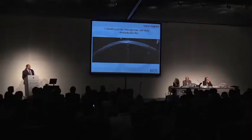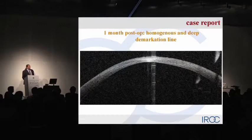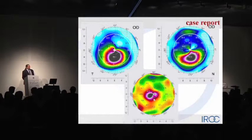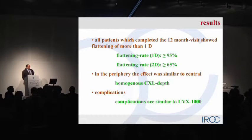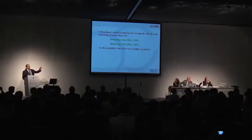That is the topography. Here's the thinnest point and the demarcation line — pretty homogeneous cross-linking at one month. This is a comparison of the topography: the steepest point went from 55 diopters down to about 52 diopters, and the difference maps show around six diopters of flattening within the pupil, which explains the improvement of visual acuity. Looking at the data, about 95% of patients received a flattening of one diopter or more, and a flattening rate of two diopters or more was achieved in 65% — much more than has ever been seen before in standard cross-linking. In the periphery, the effect was always similar to central, so we're really getting a homogeneous cross-linking profile in depth.